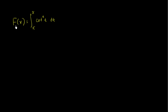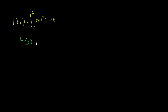Let's say that we have capital F of x as being equal to the definite integral from π to x of cotangent squared of t dt. What we're curious about finding is the derivative of this — we want to figure out what F prime of x is equal to.